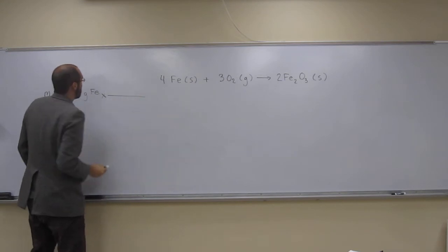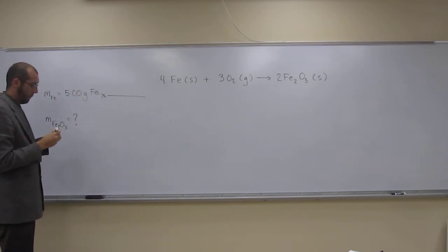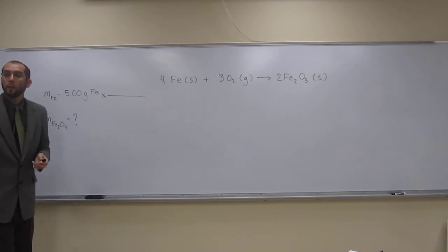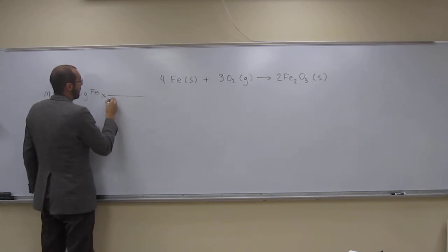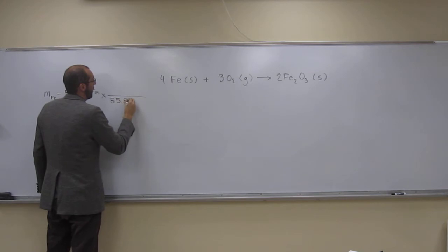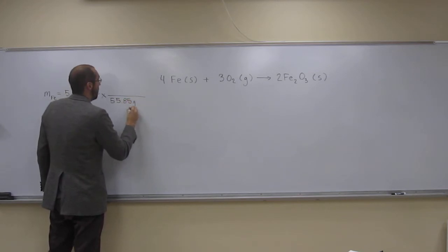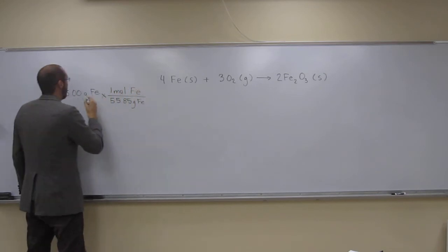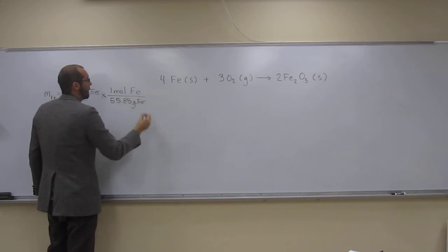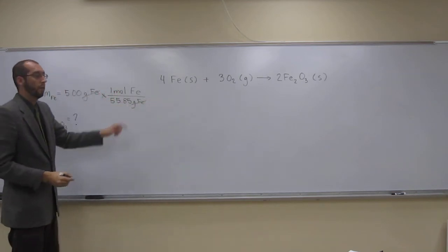So first we start by converting grams to moles. How do we do that? Using the atomic mass. When we look up there, the atomic mass of iron is 55.85 grams of iron, or one mole of iron. So that cancels, cancels. So now we're at moles of iron.